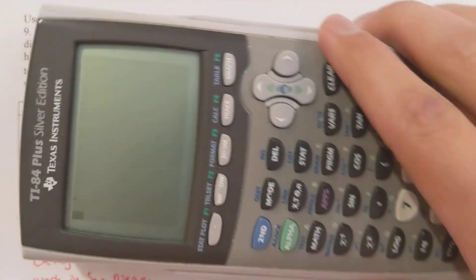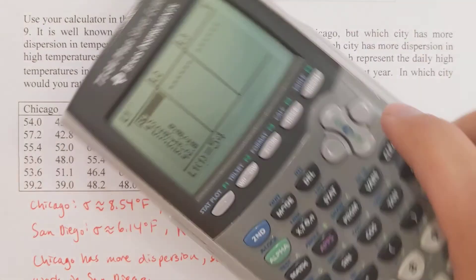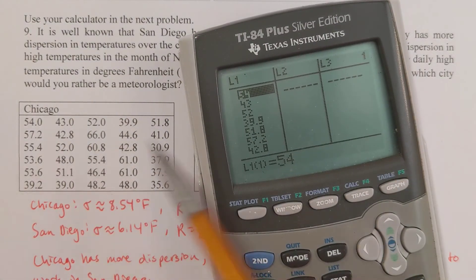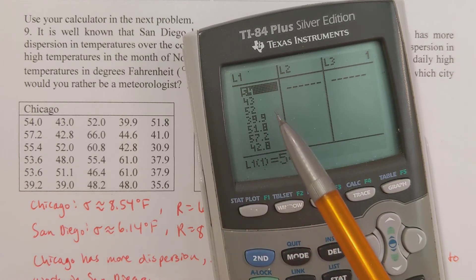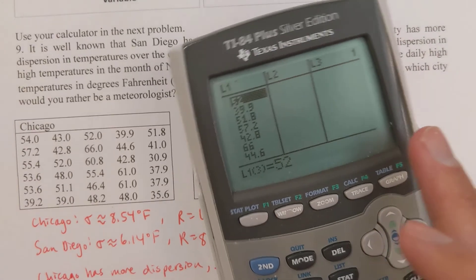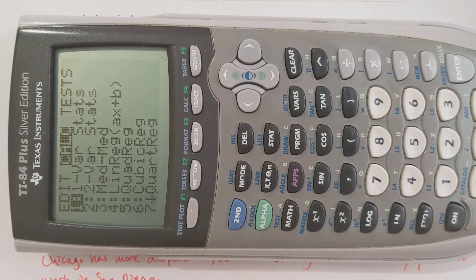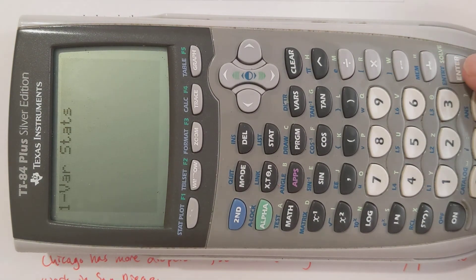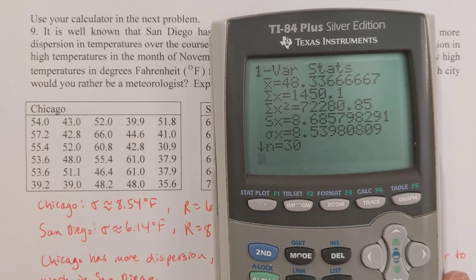What I do is I'm going to use my calculator and type in the 30 numbers that are listed here for each city. So the first number would be 54 and then hit enter, then 43 and then hit enter, and then 52 and then hit enter, 39.9 hit enter, 51.8 hit enter, 57.2 hit enter, and I do that. So I've got all the values there. The next thing I do is I hit stat, then go over to calc, and then I want one var stats, which is already highlighted there. Usually I have to hit enter twice and that gives you all the statistical information about the data set.